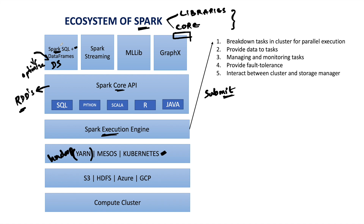Spark SQL is used to write SQL-like queries in Spark. DataFrames and Datasets allow us to use functional programming to solve data processing problems. Spark Streaming is used for processing a continuous stream of data. The machine learning library in Spark contains a set of libraries for machine learning, deep learning, and AI-related algorithms. GraphX is used for graph processing algorithms — for example, on LinkedIn, person A might follow person B, who follows person C and D, and person D might follow back person A. Social networking applications like Instagram, Twitter, and Facebook all use graph algorithms for storing interconnections between users.